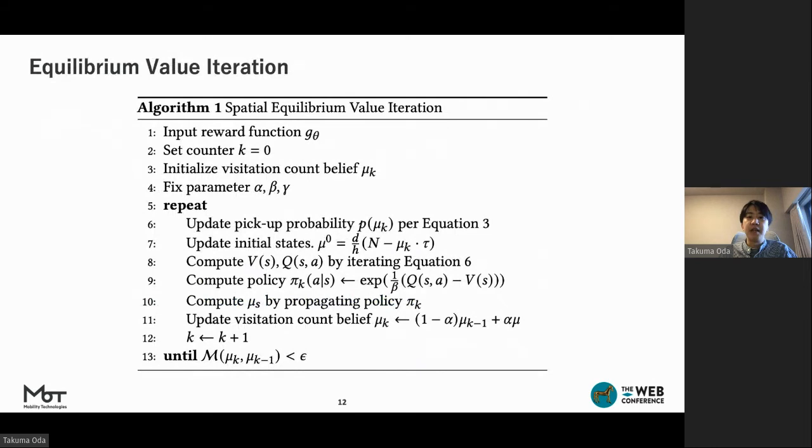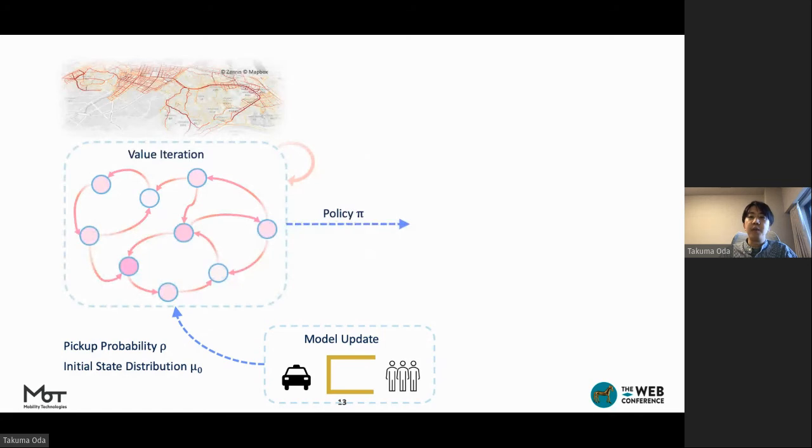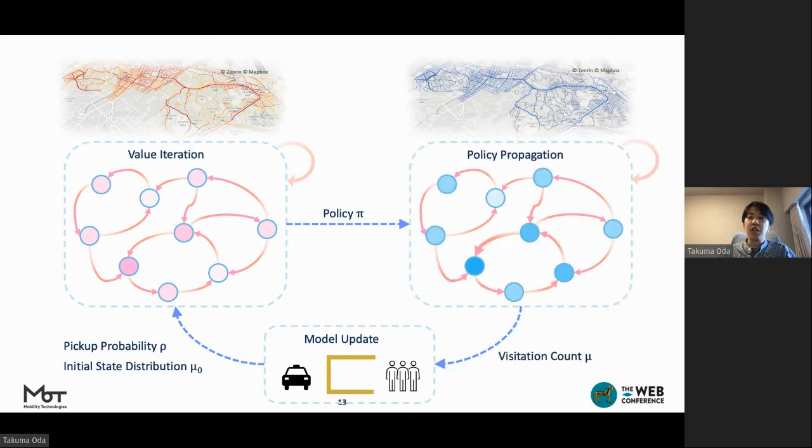This slide presents the algorithm which computes the policy and visitation count at the equilibrium. At the beginning of each iteration, we update the pickup probability and the initial state distribution according to the previous visitation count. And then we iterate Bellman backups to find optimal policy. Next, we compute the expected visitation count by propagating a probabilistic agent traversing the MDP given the current policy, starting from the initial state distribution and use the weighted sum of the previous visitation. The process is repeated until mismatch distance falls below the threshold.